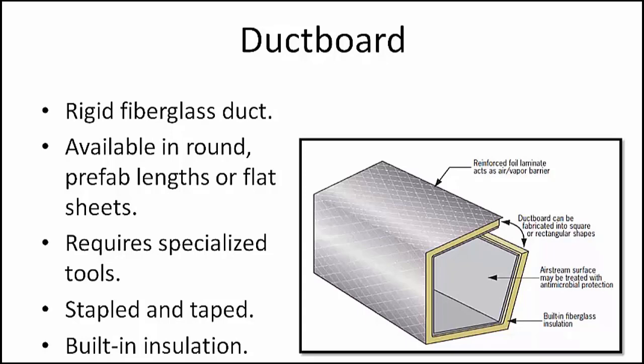Fiberglass duct board is commonly used for box plenums, extended plenums, and to run trunk lines in both residential and light commercial duct systems. The tape used to tape joints must be approved for the closure of all joints.